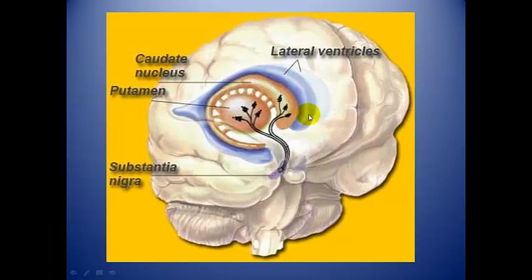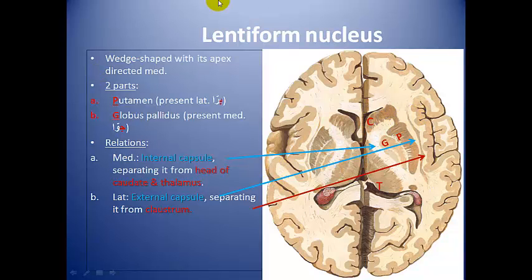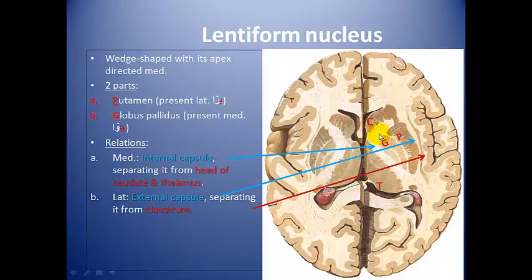Here we can see the caudate nucleus, the lentiform, and the lateral ventricle. The internal capsule separates the head of caudate from the lentiform nucleus. The lentiform nucleus consists of the globus pallidus medially and the putamen laterally. They are separated by a small strip of white matter called the external medullary lamina, which is very important to remember.